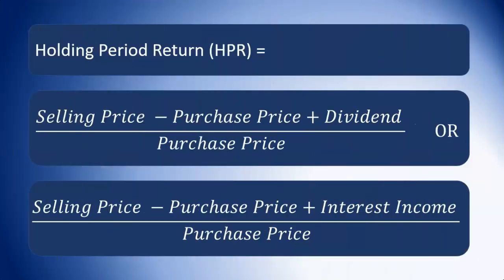So here we go — holding period return: selling price minus purchase price, plus dividend or interest income, whichever applies, and we divide the answer by the purchase price. So: selling price minus purchase price, plus either the dividend income or interest income, divided by the purchase price.